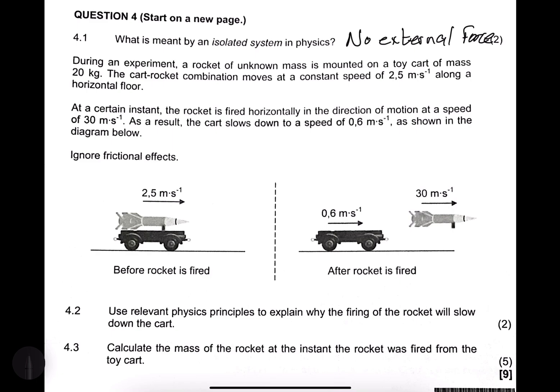They say use relevant physics principles to explain why the firing of the rocket will slow down the cart. Now the answer is quite simple. If you think of Newton's third law, that would be the physics principle, so that's Newton three. Now if you think about it, in order for the rocket to be fired in this case, it means that the cart had to exert a force on the rocket. But what happens according to Newton three, if the cart exerts a force on the rocket, then the rocket exerts an equal but opposite force on the cart. So obviously, because it experiences a force in the opposite direction, it will therefore slow down. Remember Newton's third law, it says if body A exerts a force on body B, then body B exerts an equal but opposite force on body A.